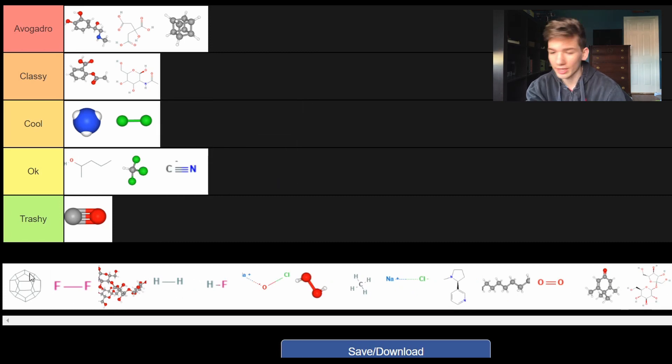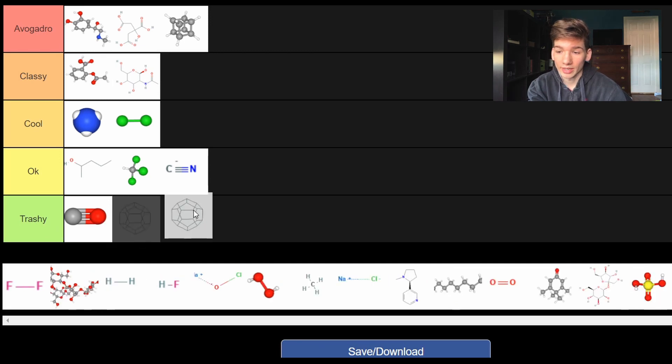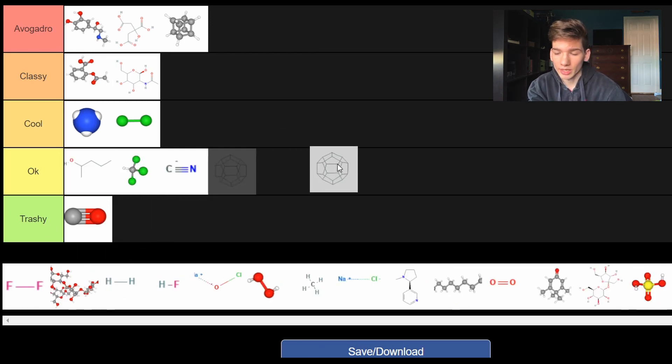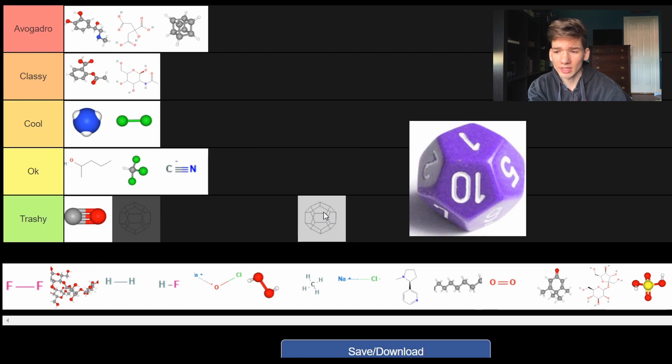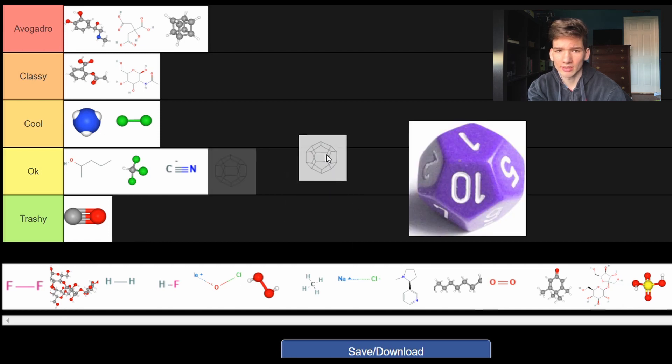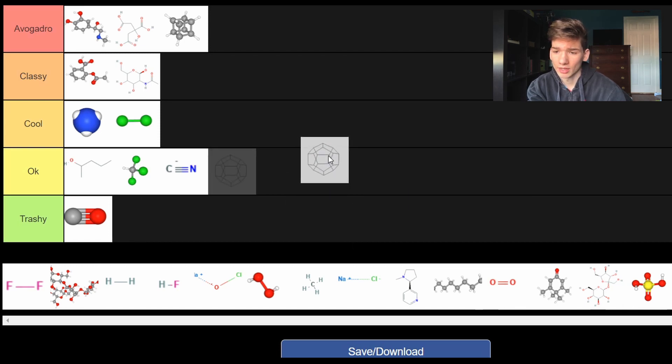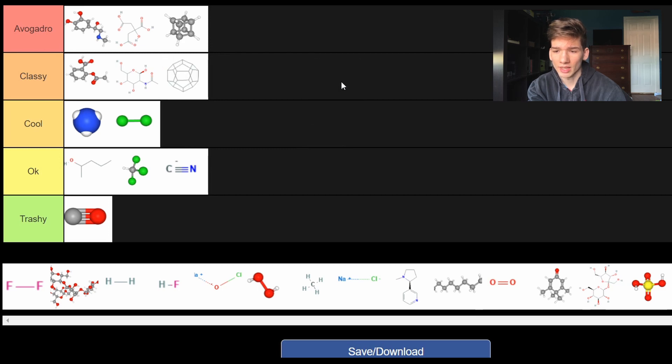Next we have Dodecahedrine. Named after its shape, the Dodecahedron. Which I think is Dungeons and Dragons dice. There's dice made in that shape. I say it's classy.